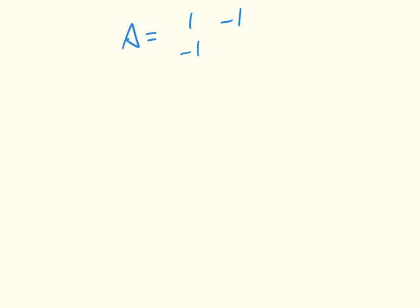It's not always possible to find a single strategy that is a best response to another. For example, consider the matching pennies game. The best response to the first column strategy is the first row, and the best response to the second column strategy is the second row. In the matching pennies game, the row player wants to choose the same as the column player — if the column player chooses heads, the row player should choose heads, and if the column player chooses tails, the row player should choose tails.